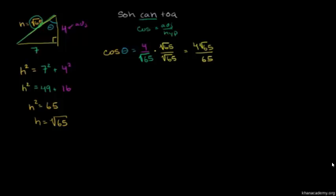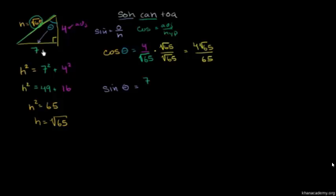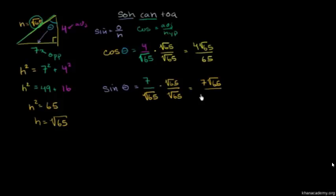Now let's do the other trig functions. The sine of theta: SOH tells us sine is opposite over hypotenuse. For this angle, the opposite side is 7 — it opens into the 7. So sine of theta is 7 over the square root of 65. If we rationalize, multiplying by square root of 65 over square root of 65, we get 7 square roots of 65 over 65.